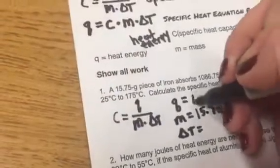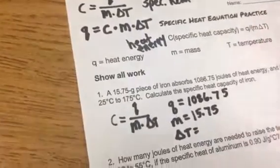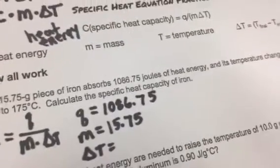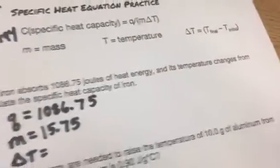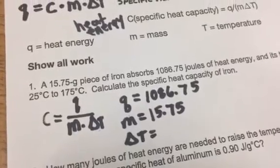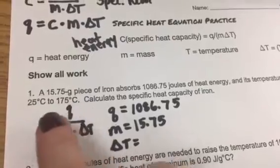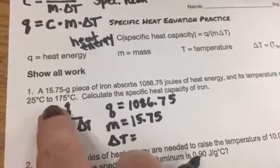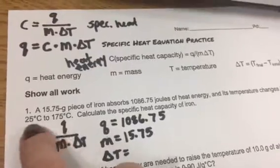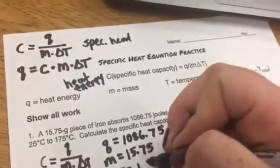Last one, change in temperature. It says the temperature changes from 25 to 175 degrees Celsius. How much does the temperature change? Well, it goes up 150 degrees, and I can figure that out by looking at the difference between those two numbers. So change in temperature, 150 degrees Celsius or just 150 Kelvins.